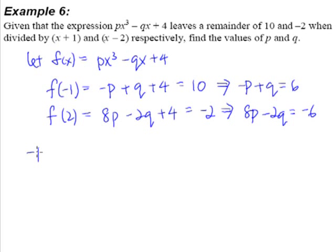-p + q = 6, we shall call it equation 1. And of course we have 8p - 2q = -6, this will be our equation 2.